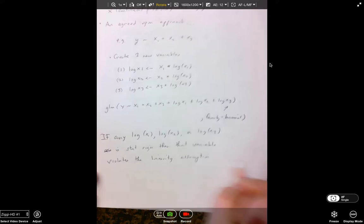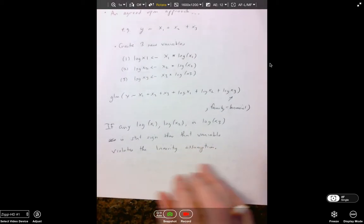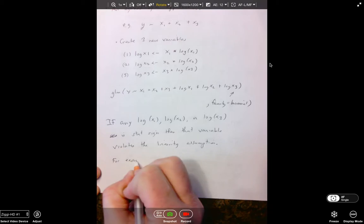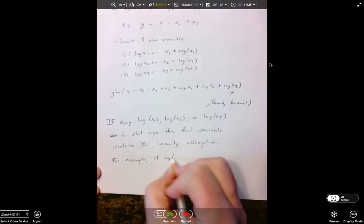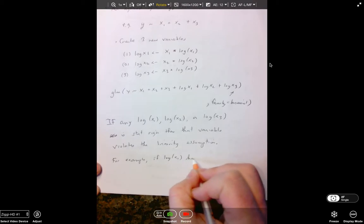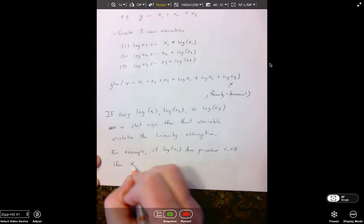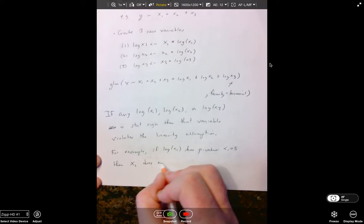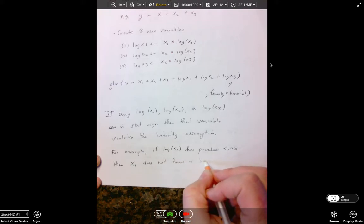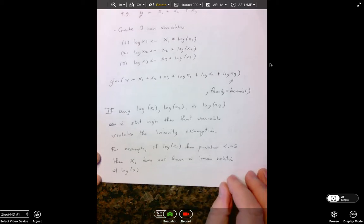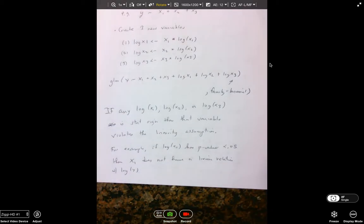The theory behind this is really cool. I couldn't produce it right now, but I just, I remember I've seen that before. So, for example, if log x1 has a p-value less than 0.05, then our predictor x1 does not have a linear relation with the log of y. Okay? So it has violated the assumption, the assumption of linearity of the legit.